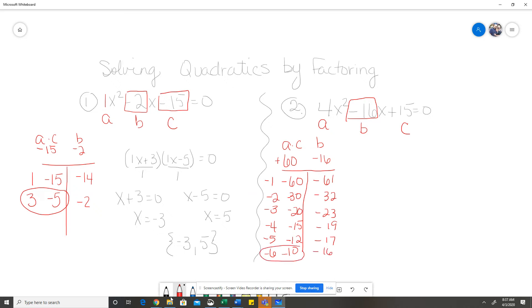This last factor pair down here at the bottom, the negative 6 and negative 10, is the factor pair that adds up to negative 16. So, that's the factor pair I'm going to want. So, I'm going to come back over here. And just like I did over here, where I put 1x plus 3. And this 1x came from my a value. Over here, I'm going to put 4x minus 6 and 4x minus 10.